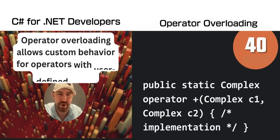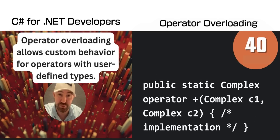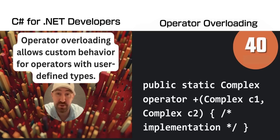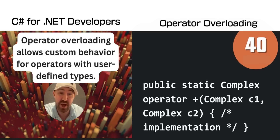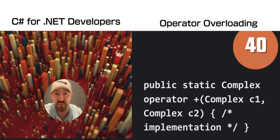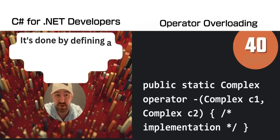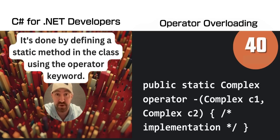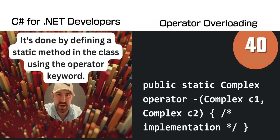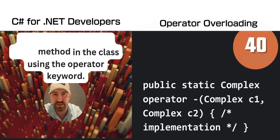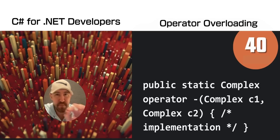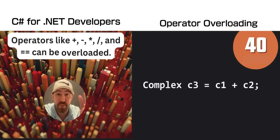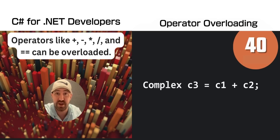In C#, operator overloading is pretty crazy, but it allows you to create custom behaviour for the mathematical operators with your own user-defined types. Here you can see it overriding the minus operator for the complex type.